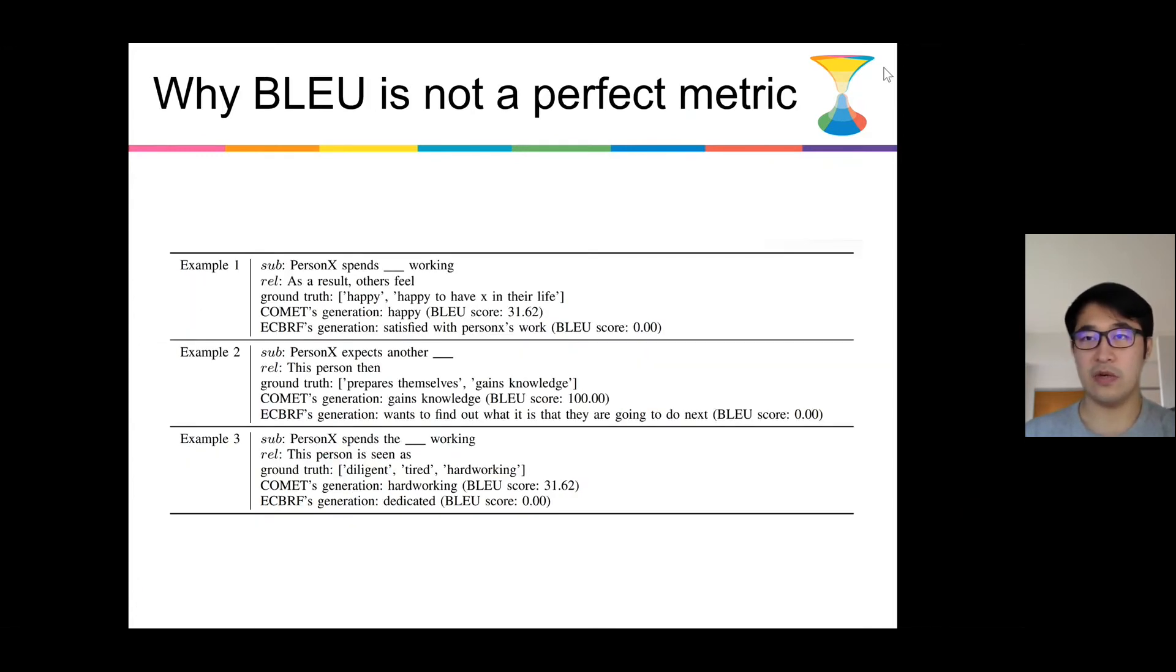However, we say that BLEU is not the perfect metric as BLEU can only compare the generation with the given ground truth, where the given ground truth can have only limited generations. Where in the CKBC task, there can be multiple correct generations for the task. And as we show in the next two slides, ECBRF tends to generate more novel generation, so the more novel generation is hard to be included in the ground truth set.